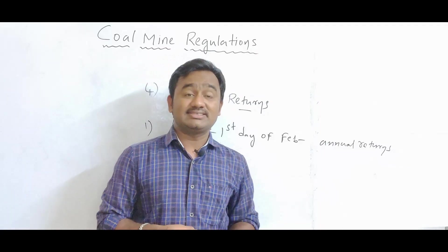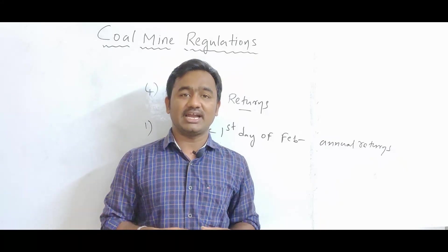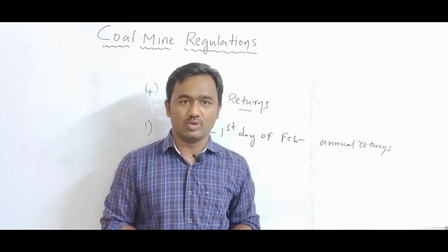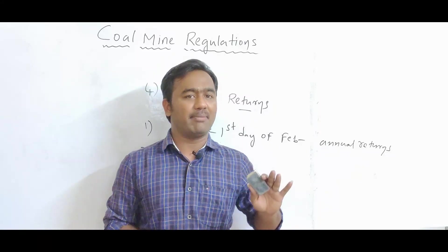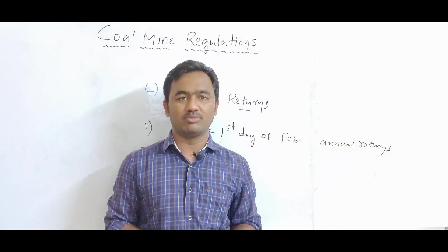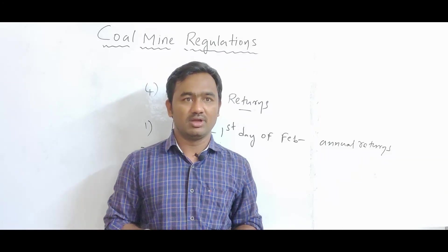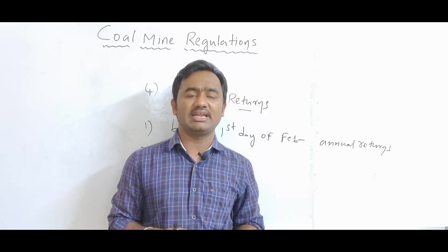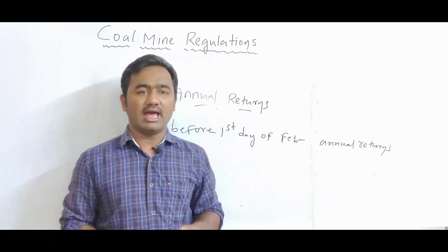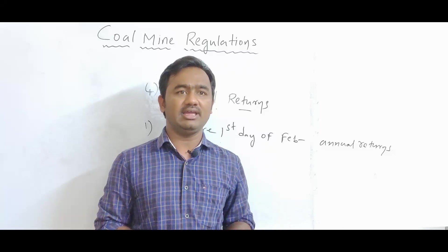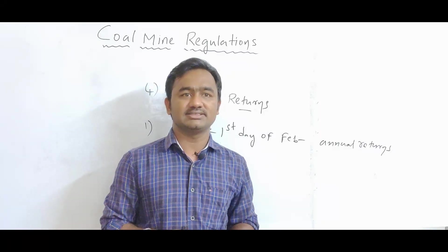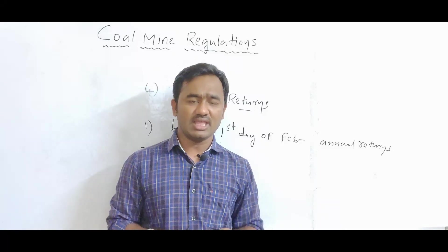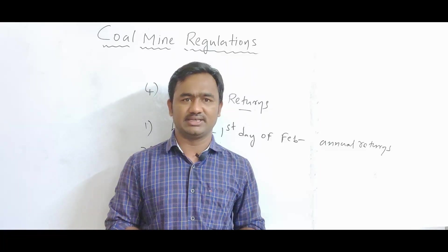For discontinuous working — where working has temporarily stopped — this is called discontinuous working. For discontinuous working, the returns must be submitted within 90 days. When working stops, we must submit within 90 days to the Chief Inspector or Regional Inspector.